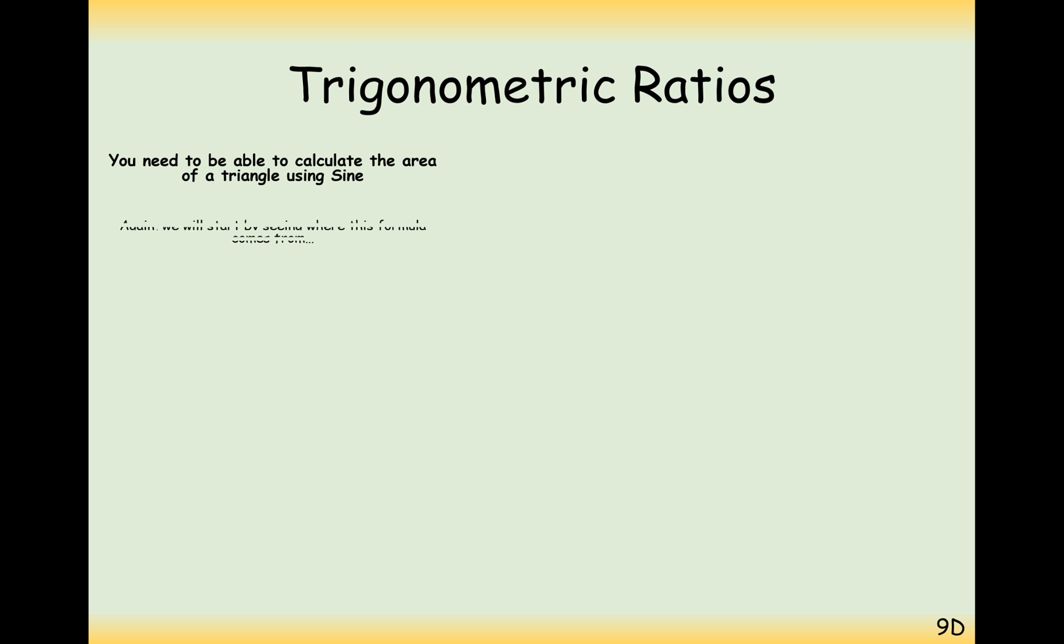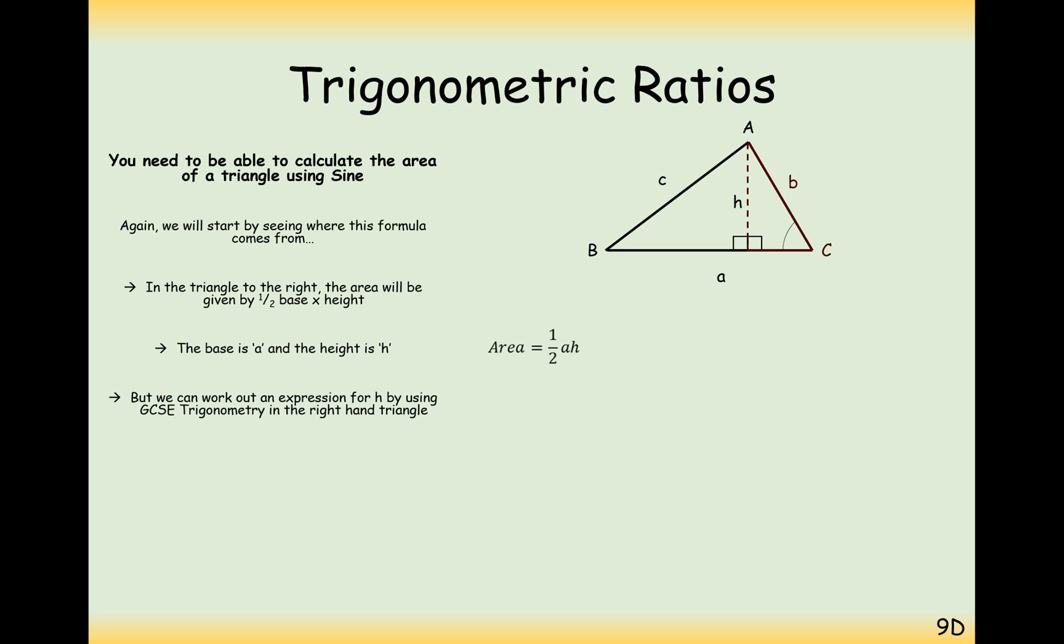We've previously seen the formula for the area of a triangle as half base times height, but can we create a new formula based on these sides here, A, B and C? Start off with your half base times height, and you may have seen at GCSE the way that we could write the height by using this side of the right-angled triangle here is going to be using a sine angle, it's going to be the hypotenuse times sine of C. So H here, the height of the triangle, can be used as B times sine C.